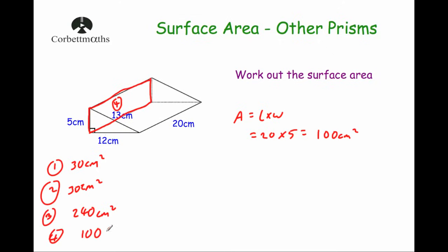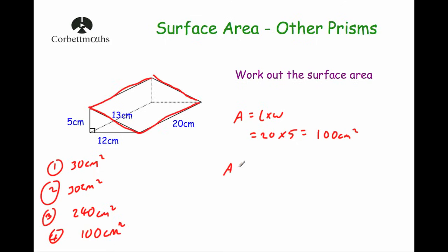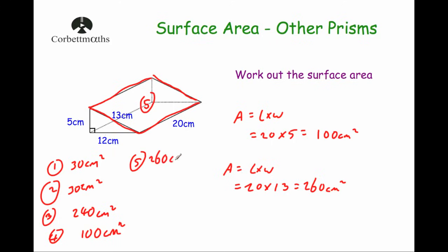Finally we have the rectangle which is the sloped face. Area equals length times width — the length is 20 and the width is 13, since that's the hypotenuse. So 20 times 13 is 260 centimeters squared. That's face number five, the sloped face.